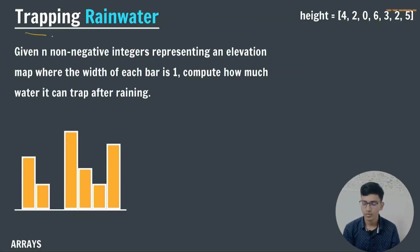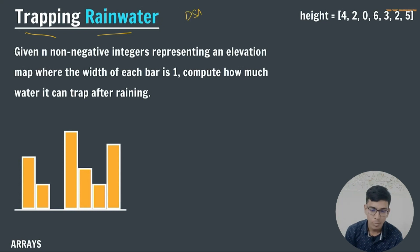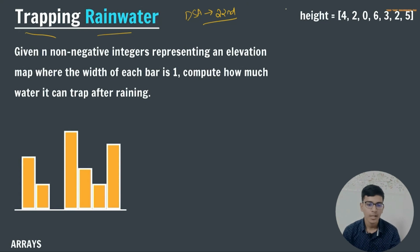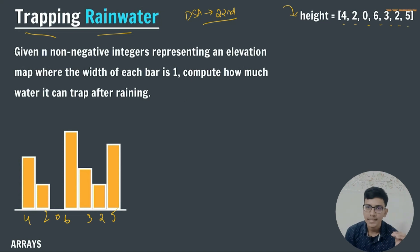Now we are going to do an important question: the Trapping Rain Water problem. This is a medium-level question found on LeetCode, HackerRank, and similar platforms. It is asked frequently in interviews and placements, and is the 22nd question in our DSA sheet. The user gives us a height array where the elements represent the height of each bar: [4, 2, 0, 6, 3, 2, 5]. The width of each bar is 1.